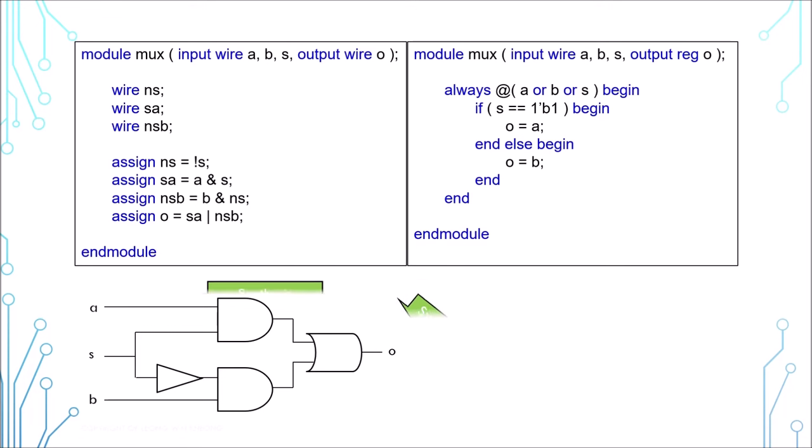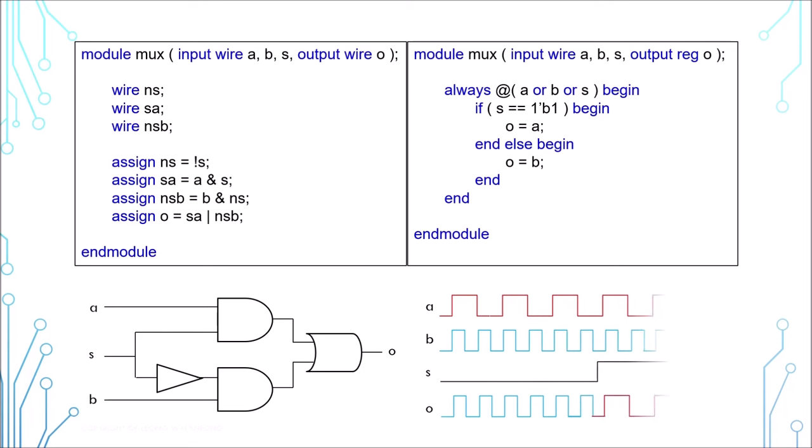This is why we should use simulation tool to simulate the design before we go into silicon production. Simulation is the second usage of System Verilog.